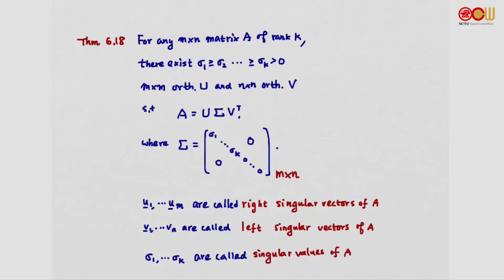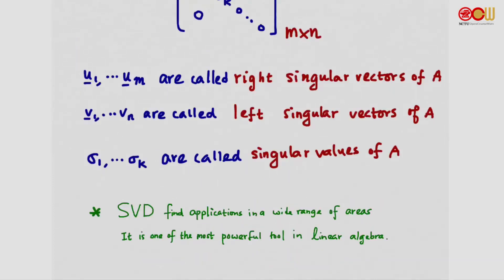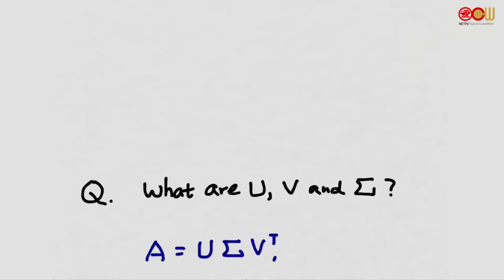These positive numbers are called the singular values of A. Because of the name 'singular values' in sigma, this decomposition or diagonalization is called Singular Value Decomposition. SVD finds applications in a wide range of areas and is one of the most powerful tools in linear algebra. Although we are not going to give a complete proof of Theorem 6.18, we can do some simple manipulation to see what these matrices U, V, and sigma are.